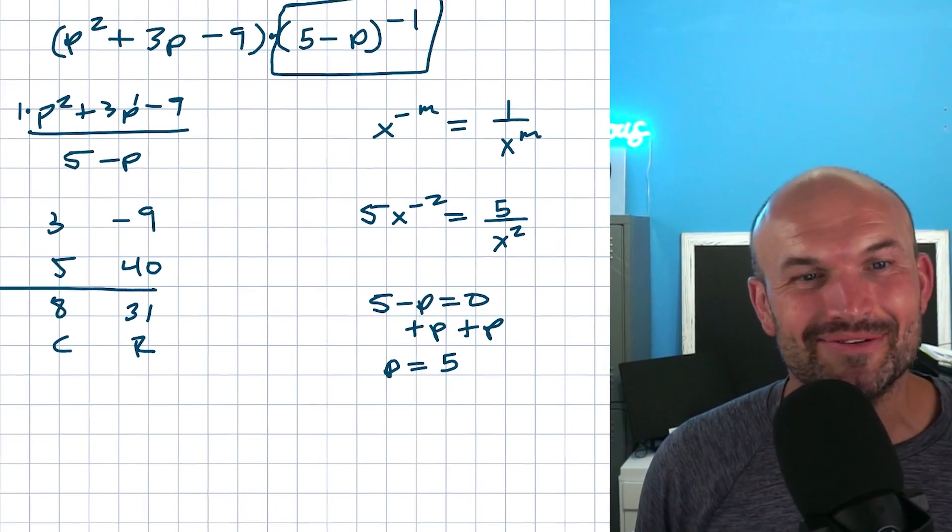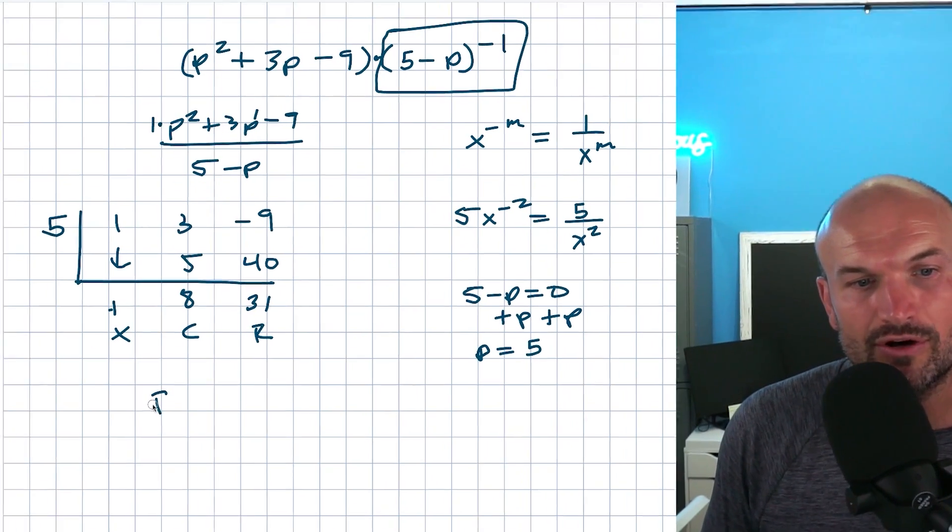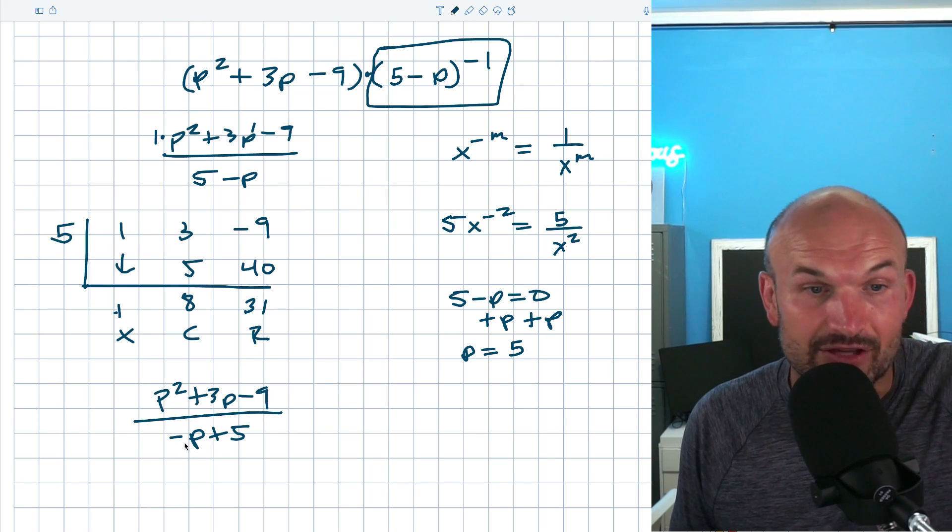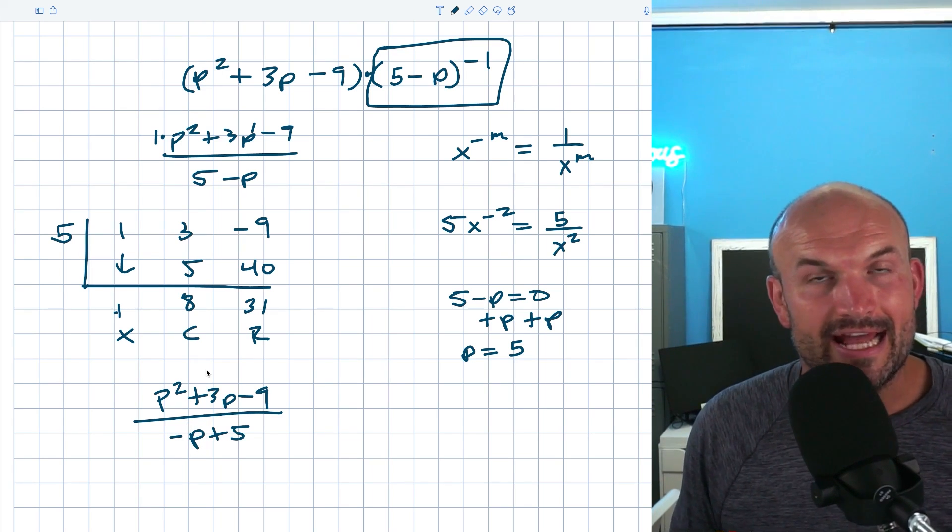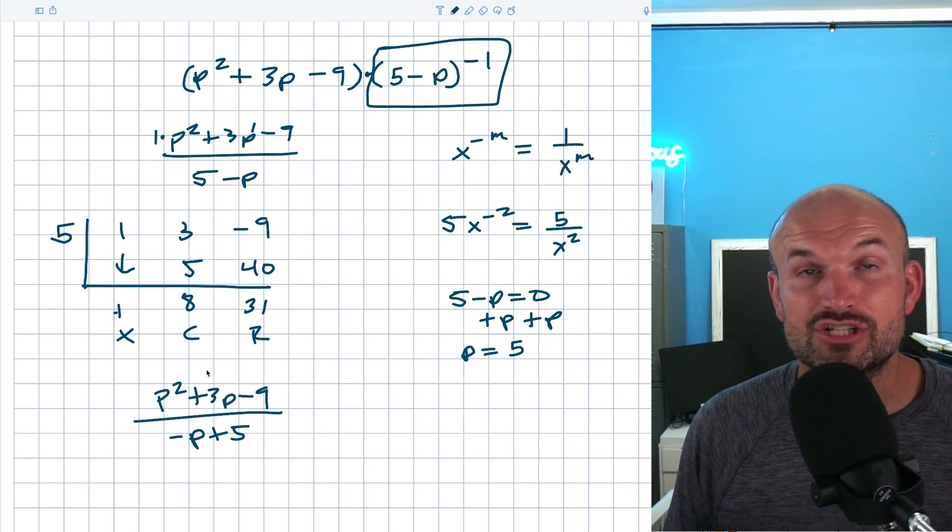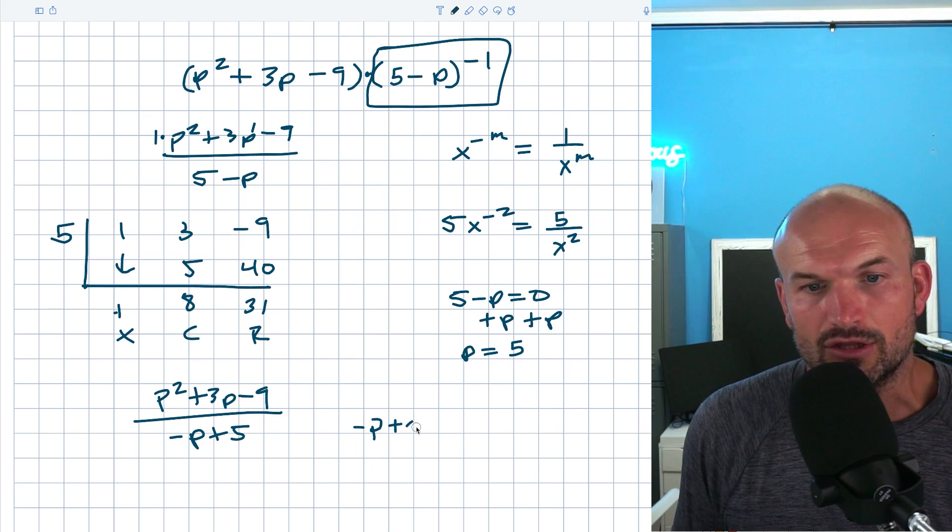And you might say, wait a minute, how do you know that's the wrong answer? And the reason being is there's a coefficient of our p. See, if I was to go ahead and rewrite this problem as p squared plus 3p minus 9 divided by negative p plus 5, what you would notice is there's a value in front of p, which is negative 1. And if you remember, whenever we have a number in front of p that is not positive 1, that's going to change your quotient. And the easiest way to kind of look at that is just to look at that using long division.